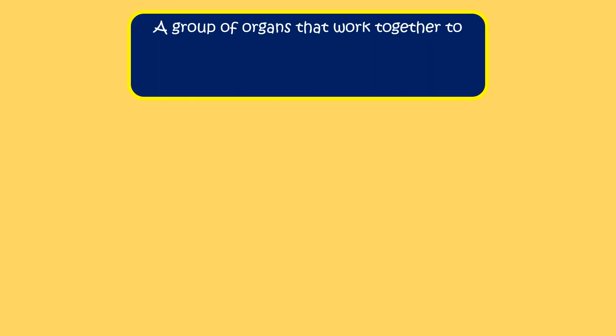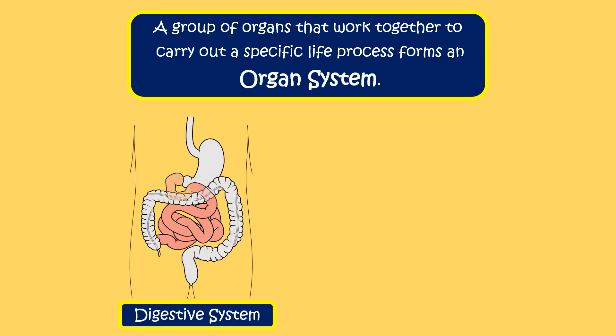A group of organs that work together to carry out a specific life process forms an organ system. For example, digestive system consists of a group of organs, namely...